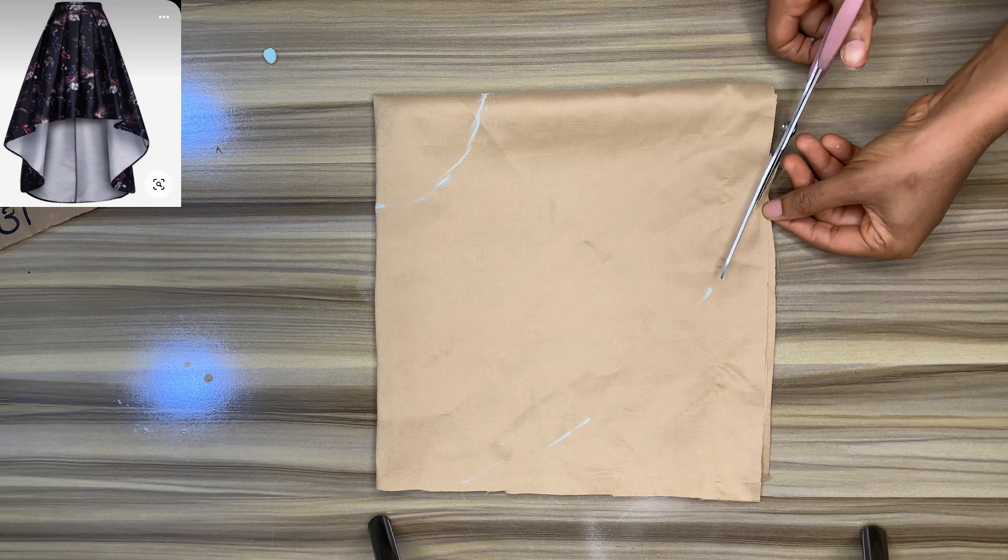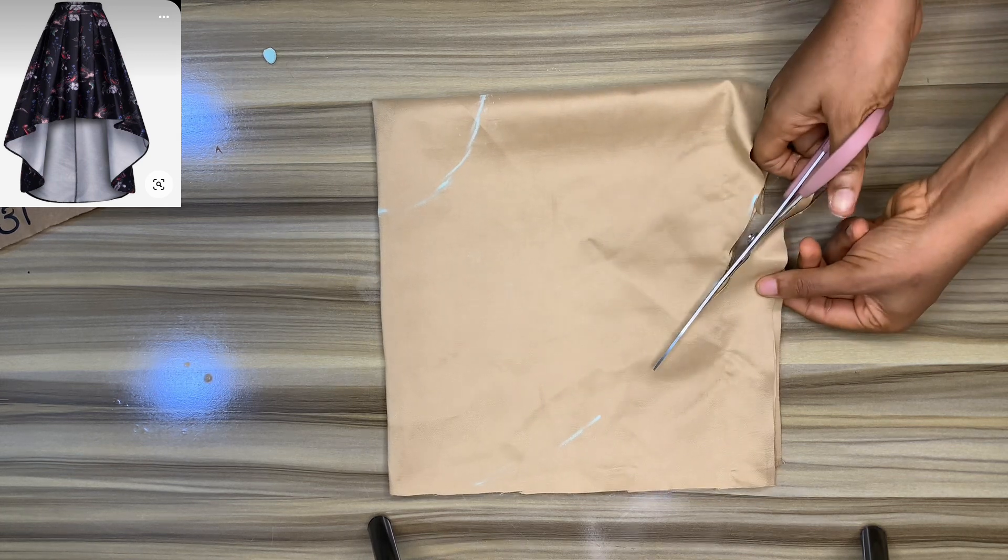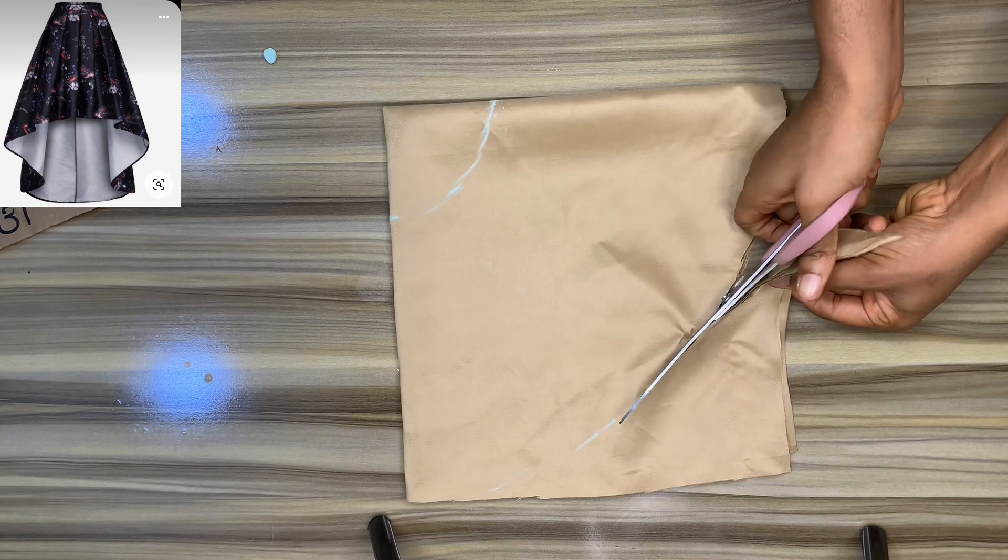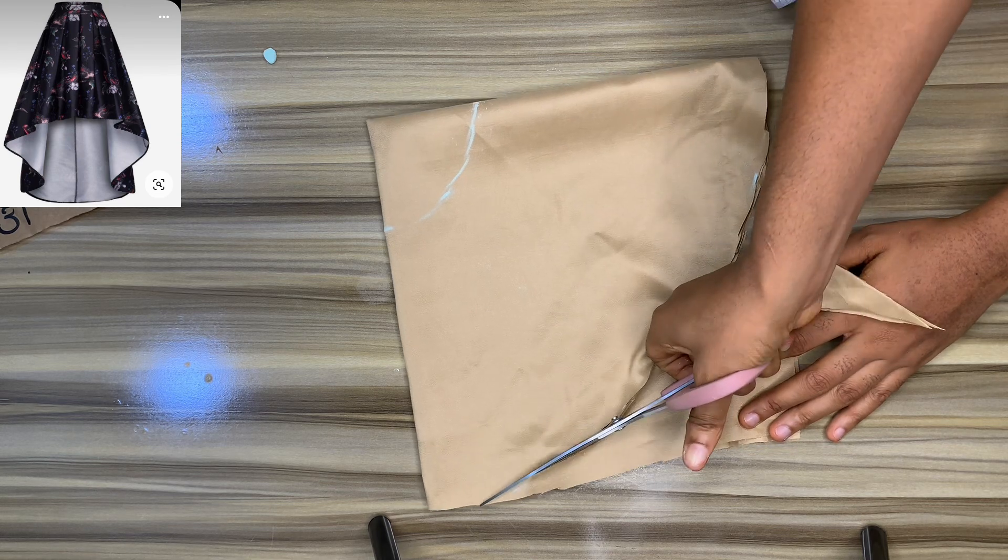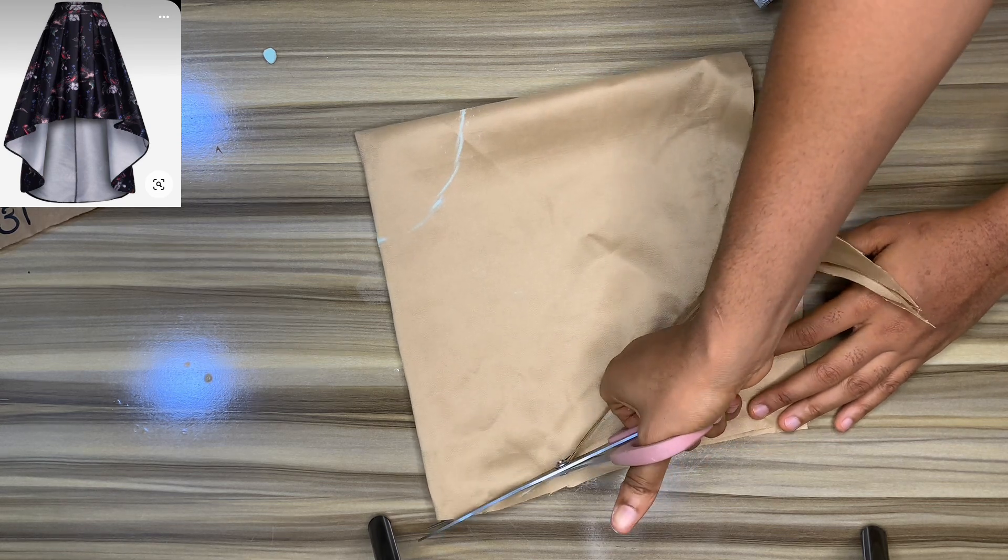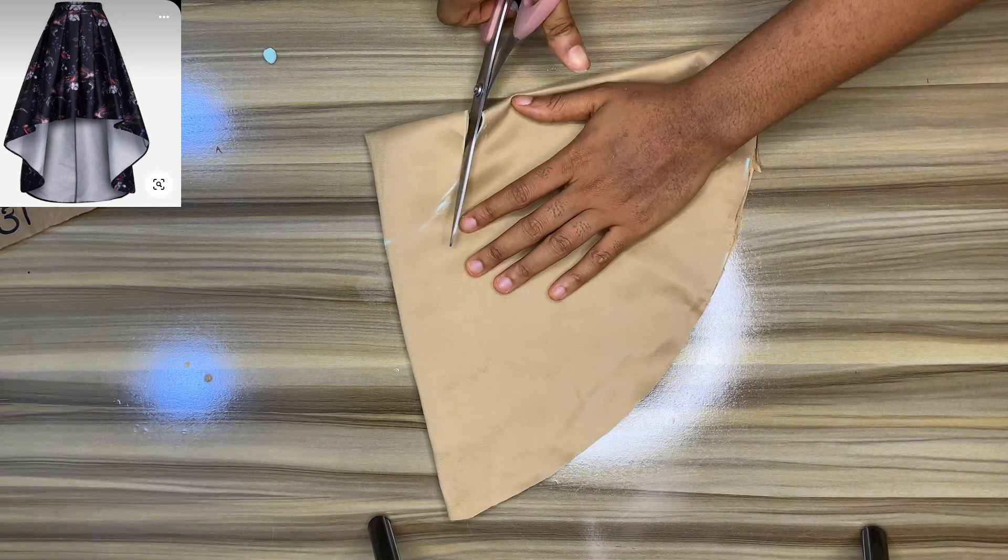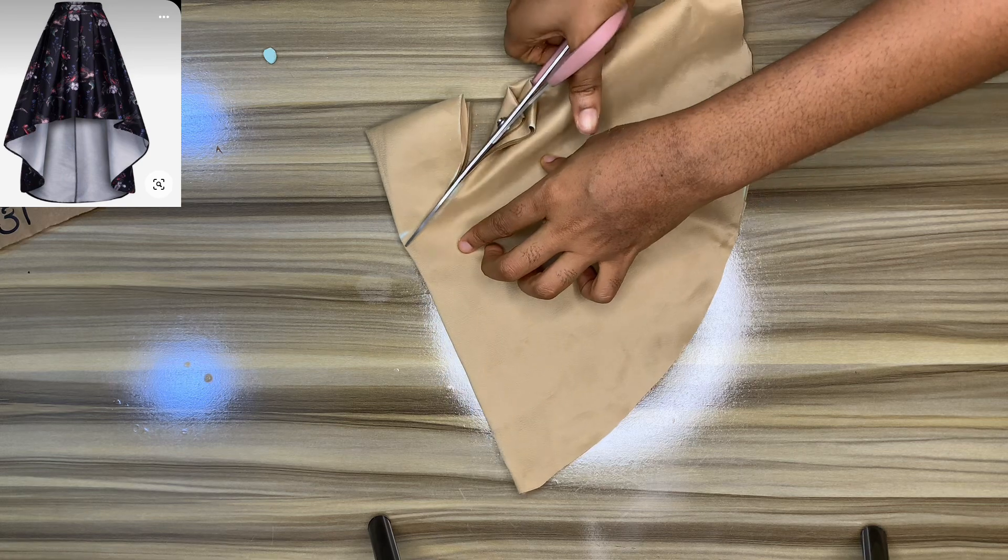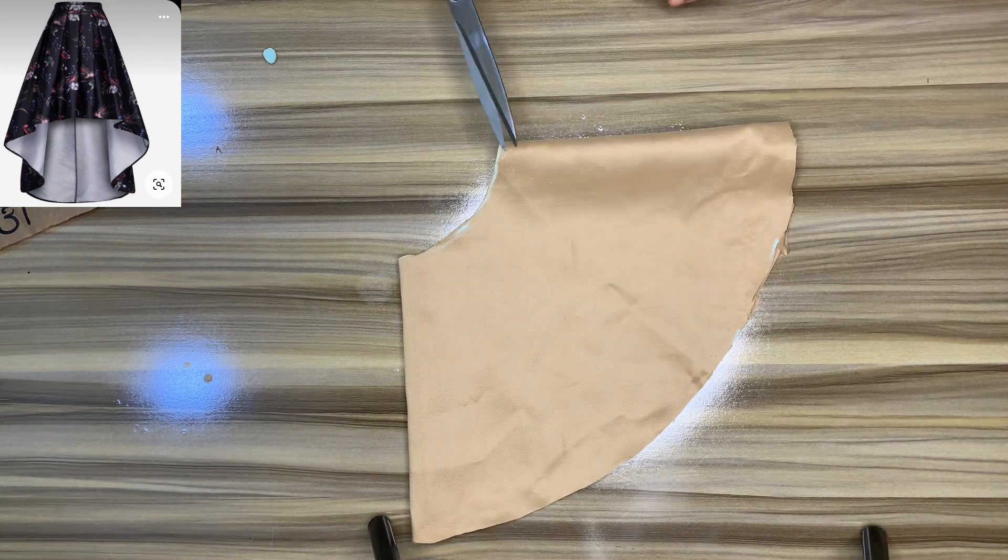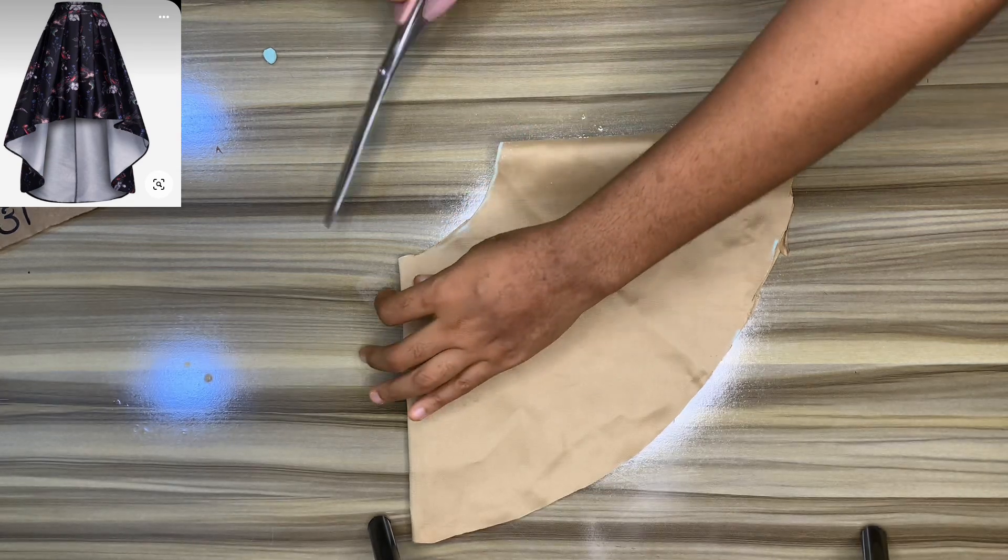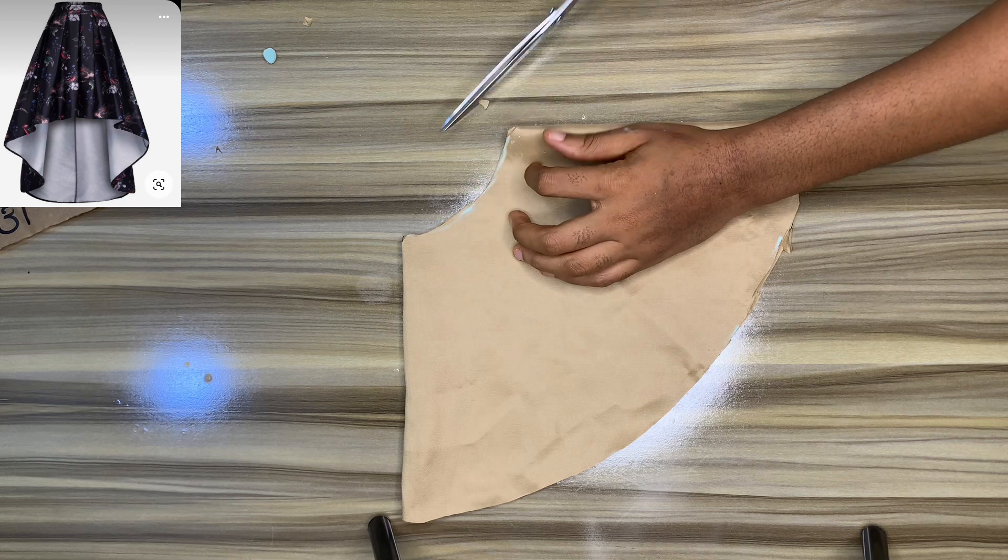When we're done cutting it out, the next thing we're going to do is determine the shorter part, because remember we're making a high-low peplum skirt. The front part of this skirt is going to be shorter than the back part. After cutting out the waist part, can you see how it is? I'm going to notch the center front and the two sides.